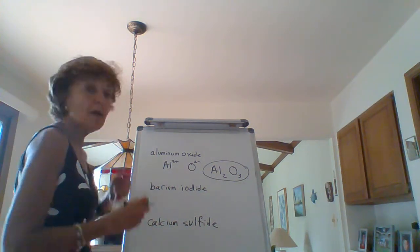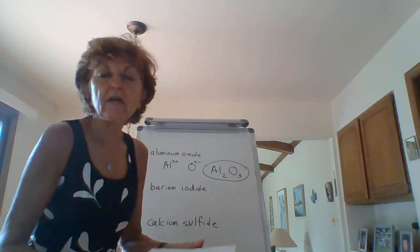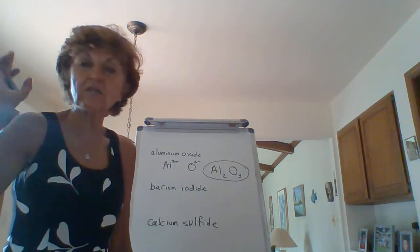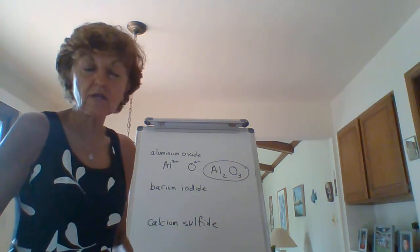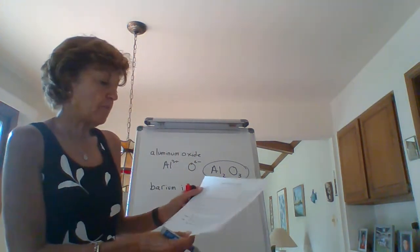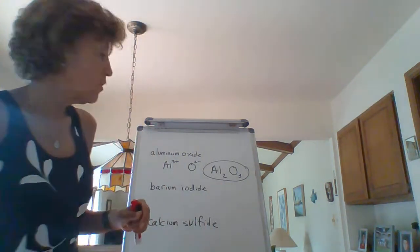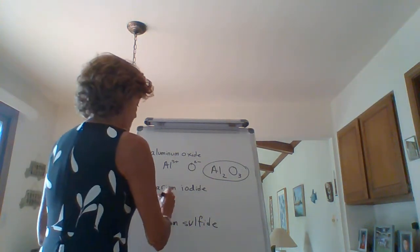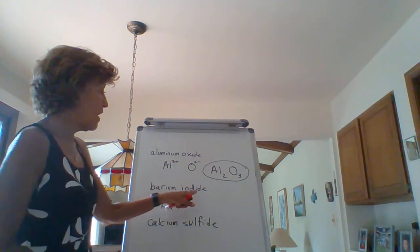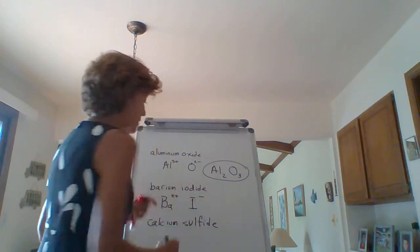Okay, barium iodide. Barium, again, it helps to know where your elements are. It helps to know what the symbol is. Remember first lecture, I told you guys, you got to know those symbols. It's just like trying to read not knowing the alphabet. So barium is a group 2A metal. So group 2A is always plus 2. You write Ba2+. Okay. Iodide is a halogen. So minus 1. I-1.